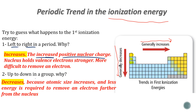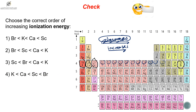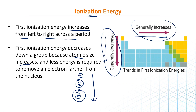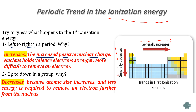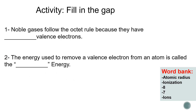When we go from up to down, the ionization energy decreases because the atomic size increases and the electrons are further away from the nucleus. That's why the ionization energy decreases down a group. You need to understand these reasons, and you can repeat the video as much as you want.